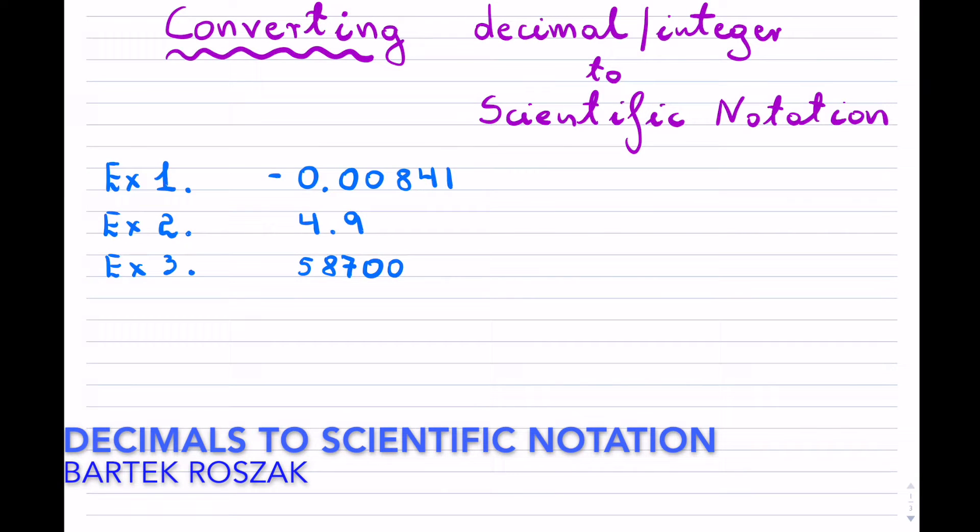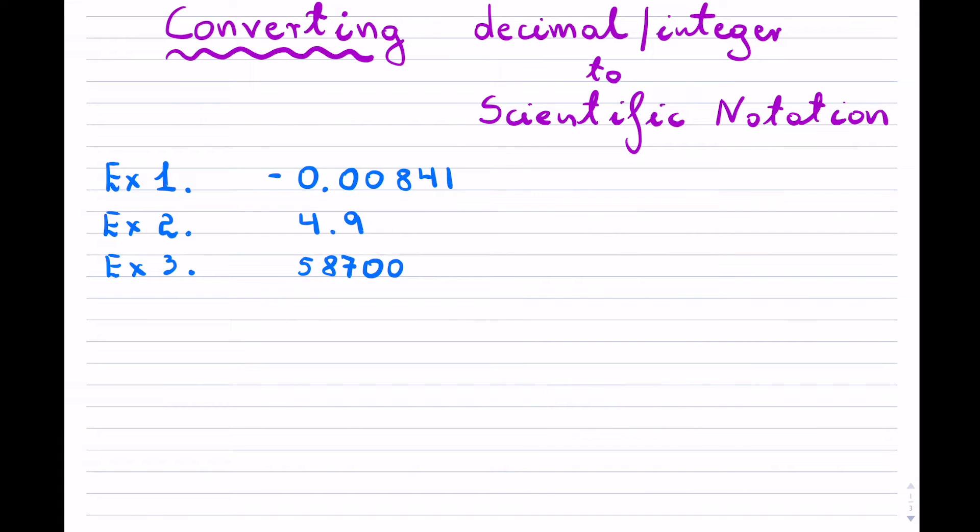In this video, I'm going to go over converting from decimal or an integer to scientific notation. So I'll just identify for you. For example, we have a decimal number here, another decimal number here, and here is actually a whole number or an integer. Now I want to convert all of these to scientific notation, which I'm going to just designate as SN.